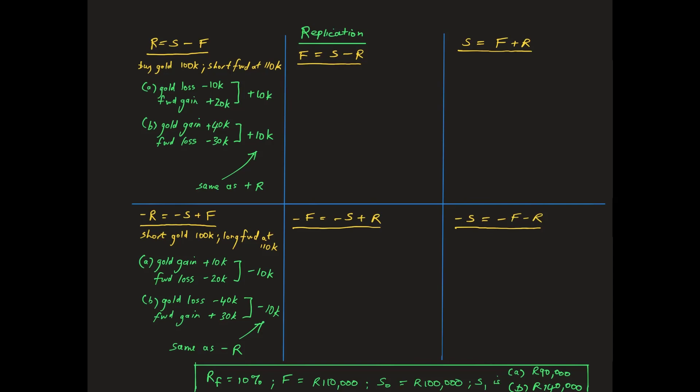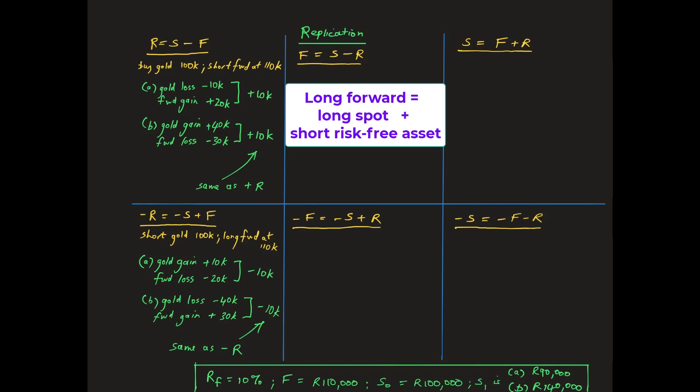In the middle column, a forward contract is replicated by combining positions in the spot market and the risk-free asset. For the upper central example, a long forward is created when a long gold holding is funded by borrowing at the risk-free rate.